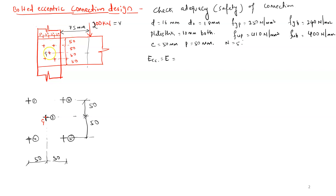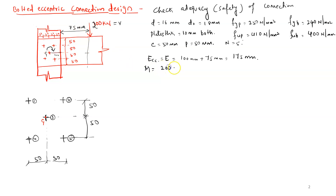The total width is 200 mm, so the CG is 100 mm from each side. The load acts 75 mm further away, so the total eccentricity is 100 + 75 = 175 mm. Because of this eccentricity, the bolts are subjected to a clockwise rotation, and the moment is M = 200 kN × 175 mm.